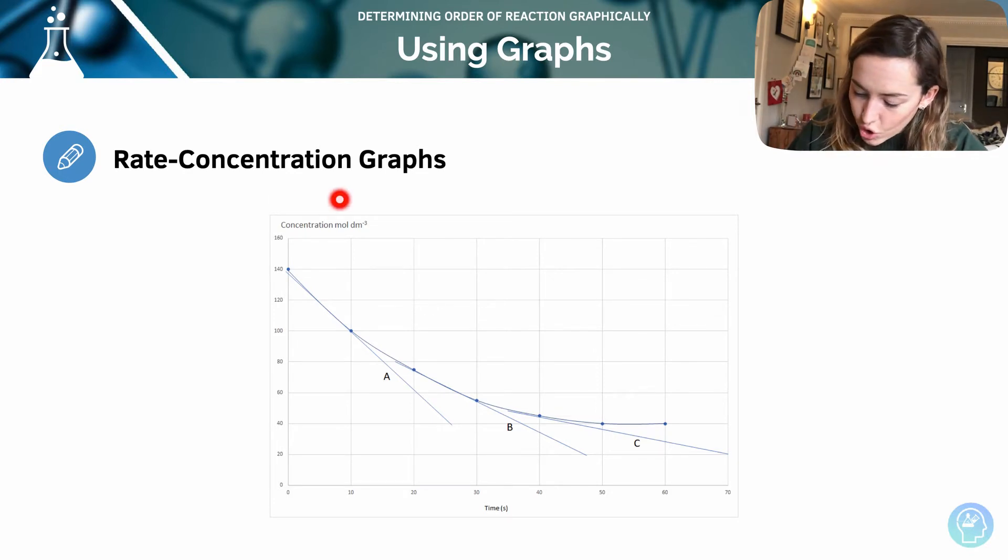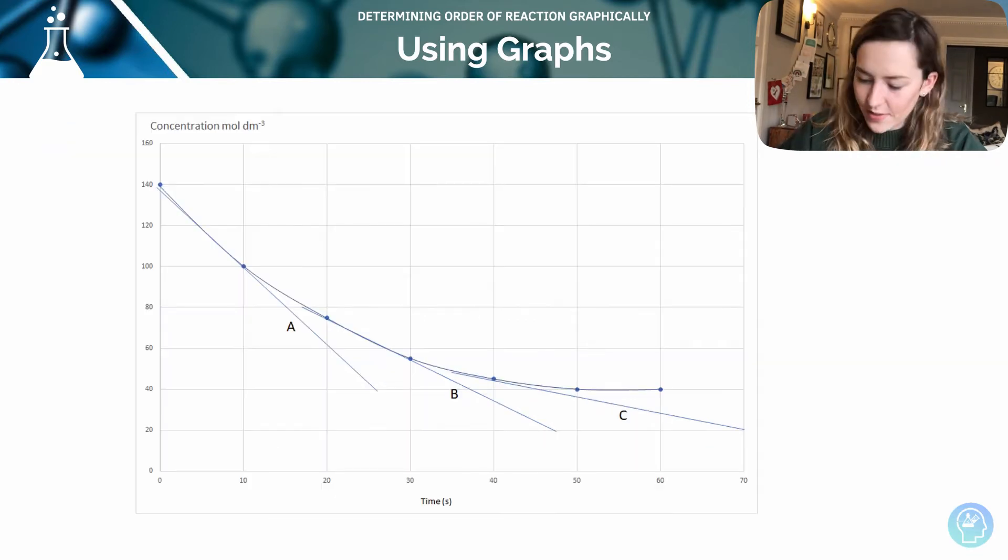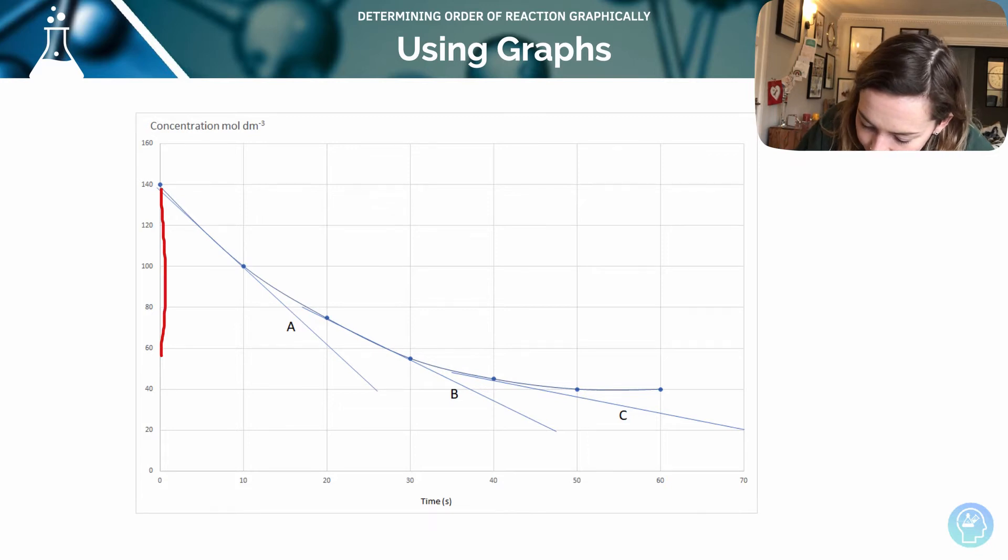So we've got here a concentration over time graph. You can see I've drawn three tangents. That would enable me to calculate the rate at those three different points. So the gradients of each of these tangents can be used to calculate the rate at a given point.